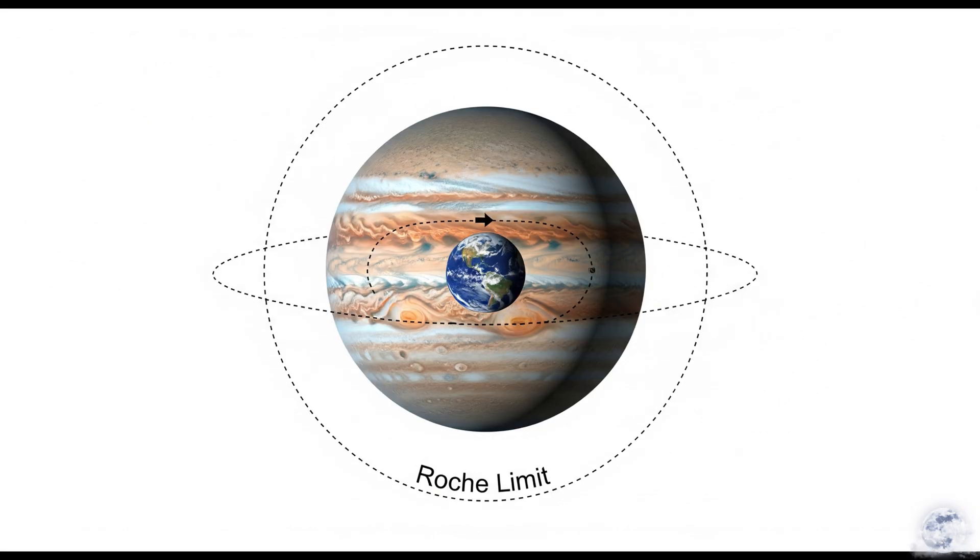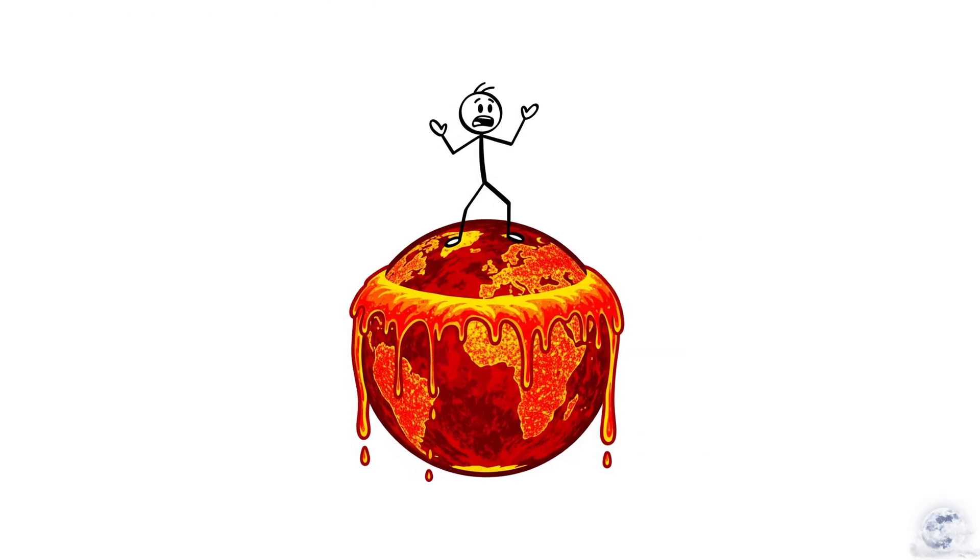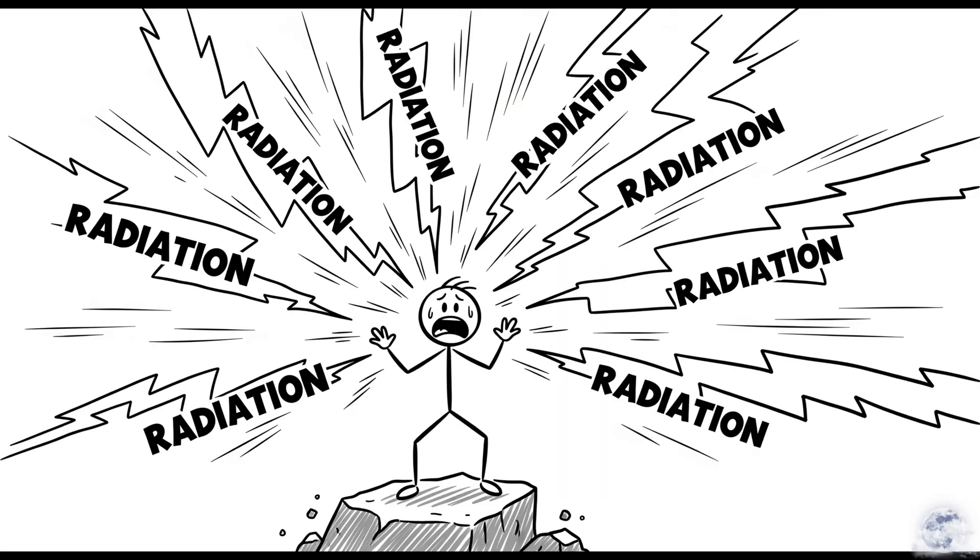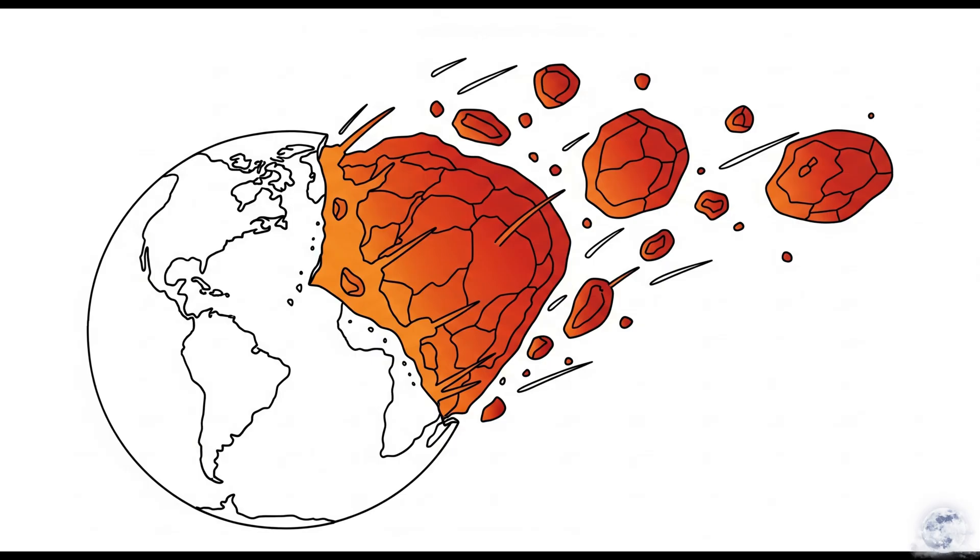Even if you somehow survived the earthquakes, the volcanoes, and being pulled into a new orbit, you'd now have to contend with your planet being physically unmade. And just to make things worse, you'd also be flying through Jupiter's intense radiation belts, which would deliver a lethal dose of radiation hundreds of times over, stripping away what's left of the atmosphere and sterilizing any surviving debris.